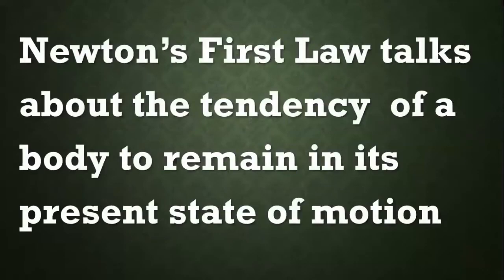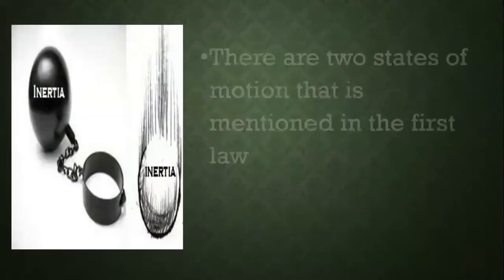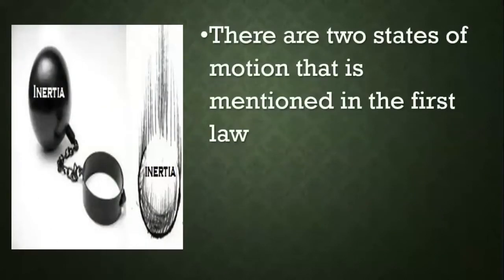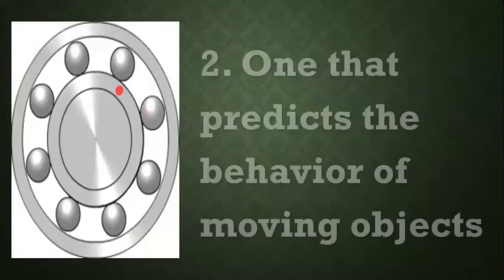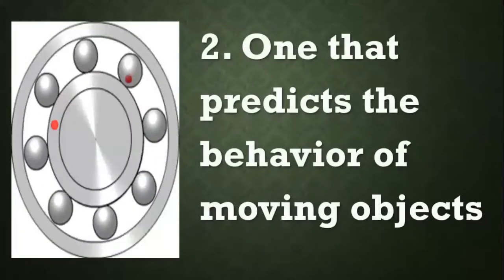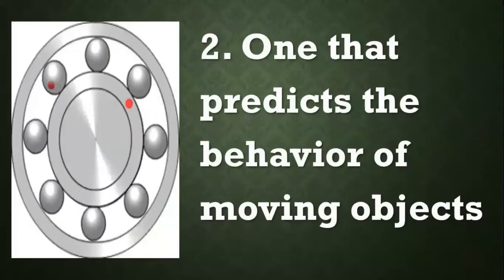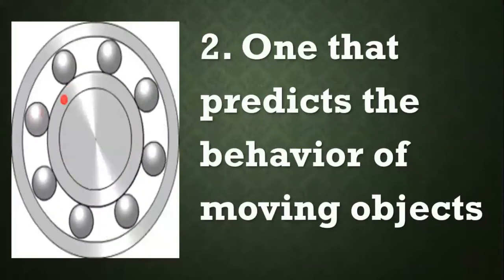Newton's first law talks about the tendency of the body to remain its present state of motion. The two states of motion mentioned in the first law are: one, which predicts the behavior of stationary objects, and second, the one that predicts the behavior of moving objects.